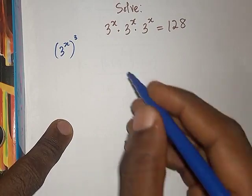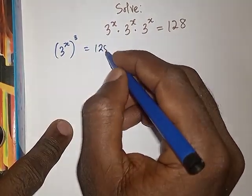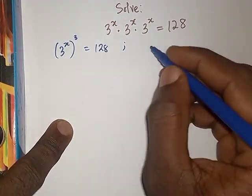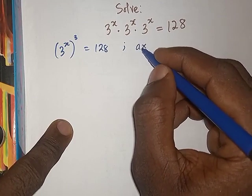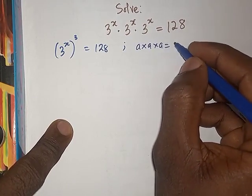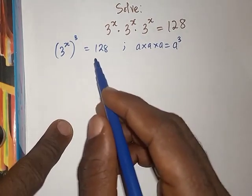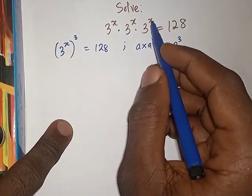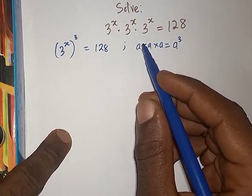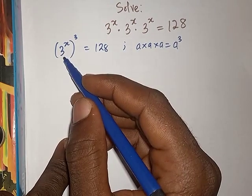If you have a times a times a, this will give us a to power 3. It means a multiplies itself 3 times. The same thing here: 3 to power x dot 3 to power x dot 3 to power x. That one also is telling us that 3 to power x is multiplying itself three times, so that's why I have 3 to power x to power 3.